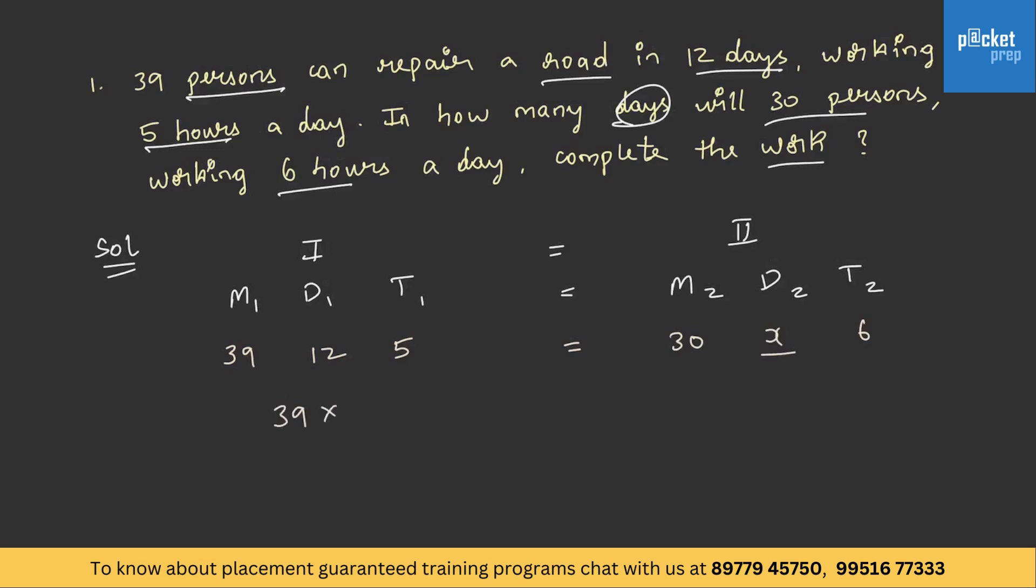If you know cross multiplication, that should be enough to solve these problems. So on simplification, the value of X is 13. So 30 persons working 6 hours a day can finish the work in 13 days.